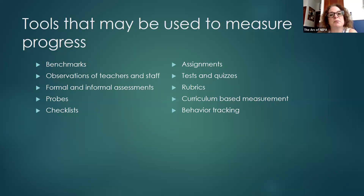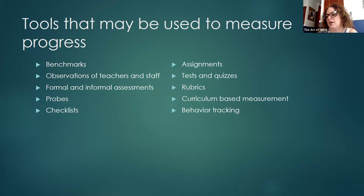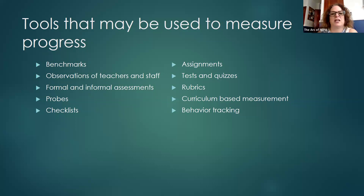The next slide talks about tools that may be used to measure progress. There's really an unlimited number of tools, but we want to make sure they're objective — not just subjective observations that can be influenced by personalities or effort. We want very specific measurements. Benchmarks describe what the child will do by a certain date — for example, oral reading fluency may be measured using AimSweb or another benchmarking tool, where probes over consecutive amounts of time generate progress based on benchmarks set. Observations by teachers and staff should not be subjective and should use checklists or some predetermined method of collecting data.